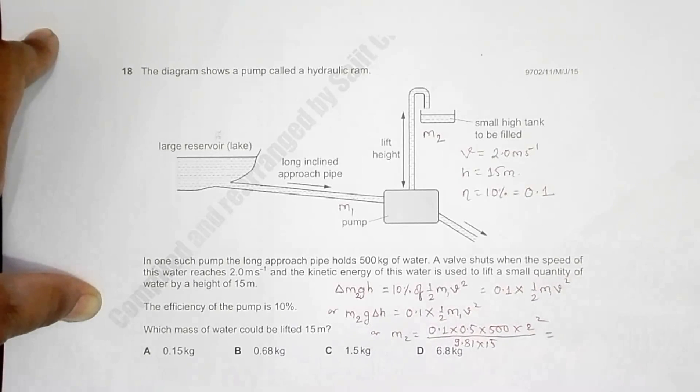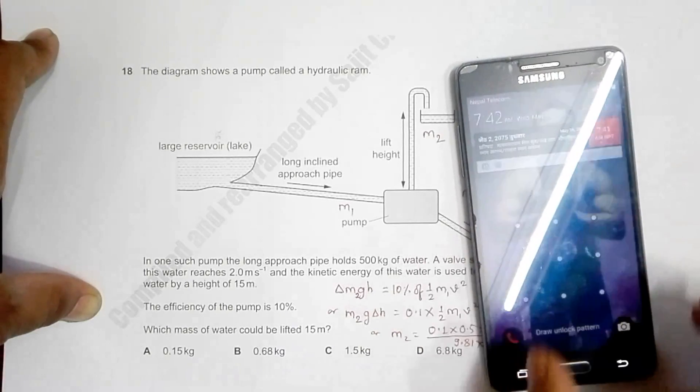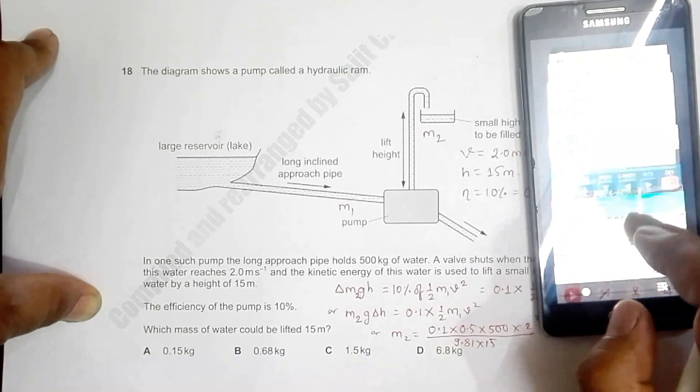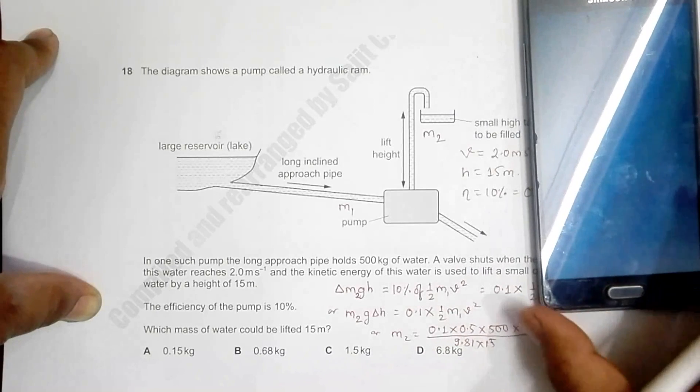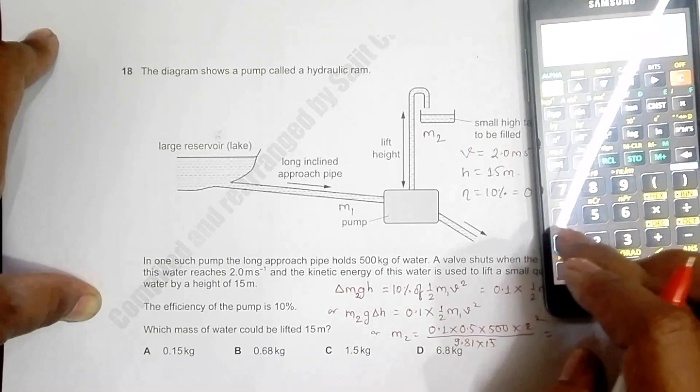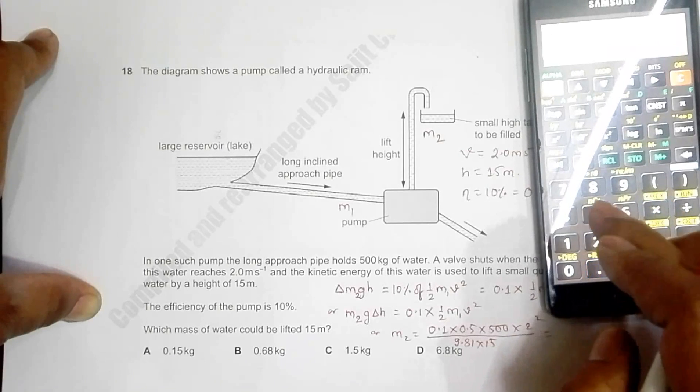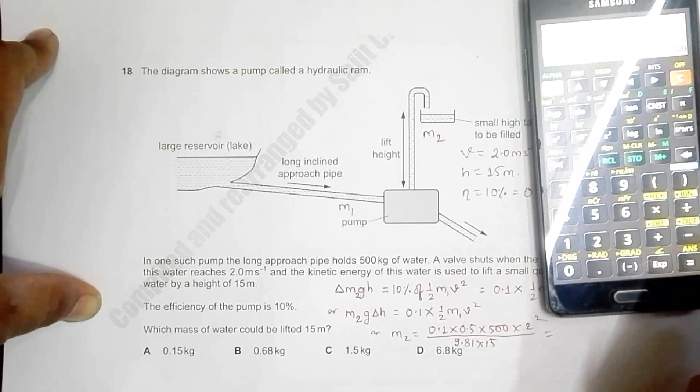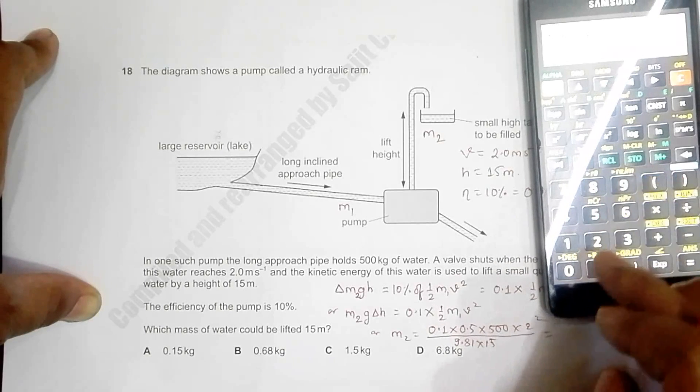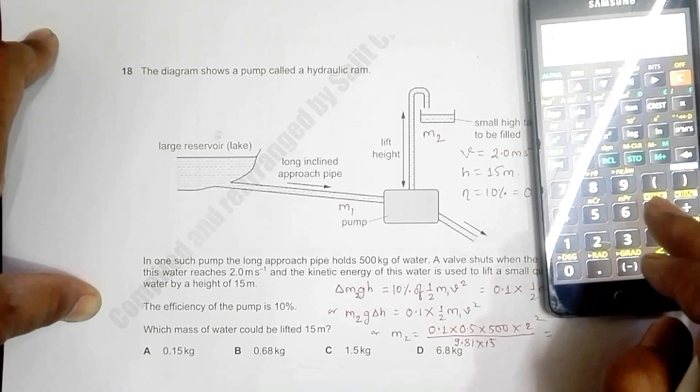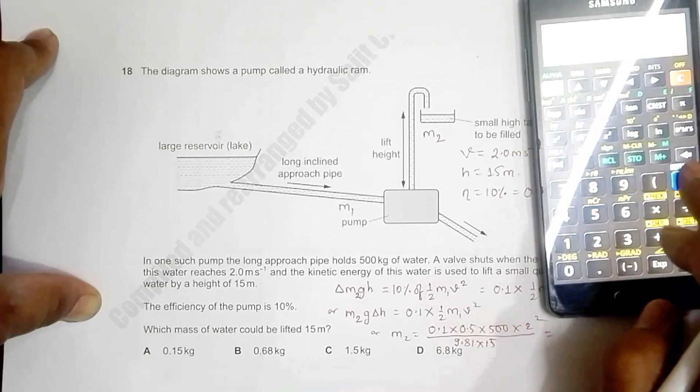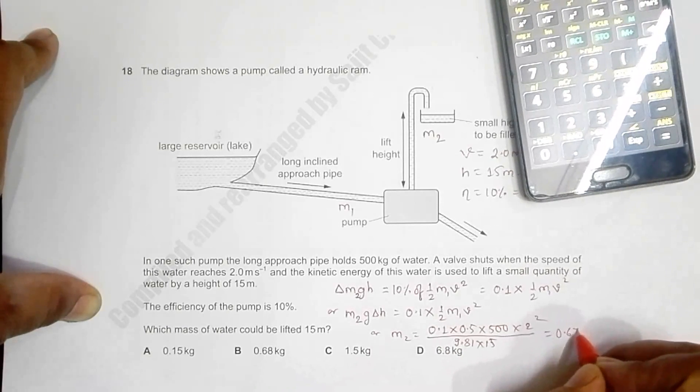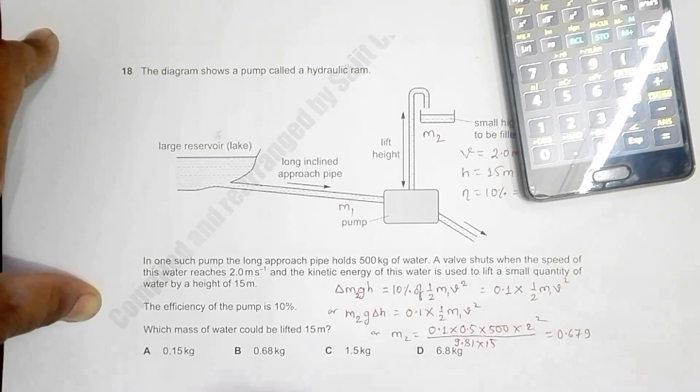So if I do the calculations, it comes out to be... Let's do the calculations. It is 0.1 into 0.5 into 500 into 2 squared is 4, divided by 9.81 into 15. So this becomes equal to 0.679.